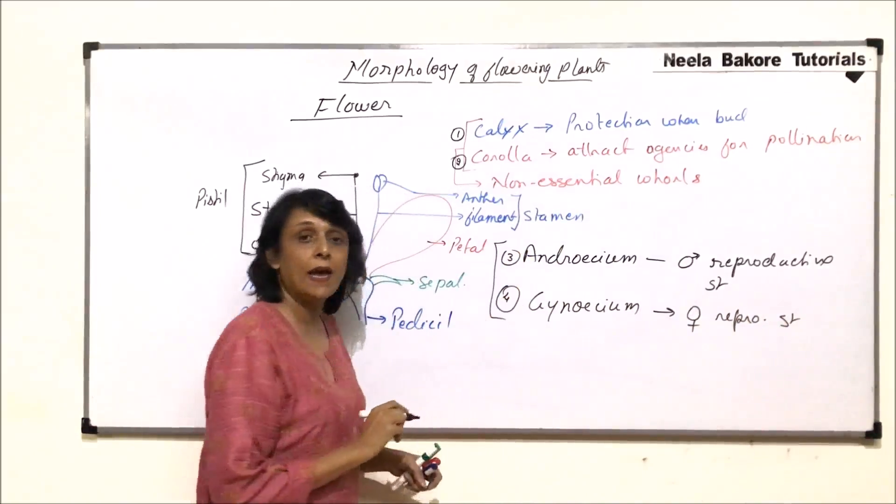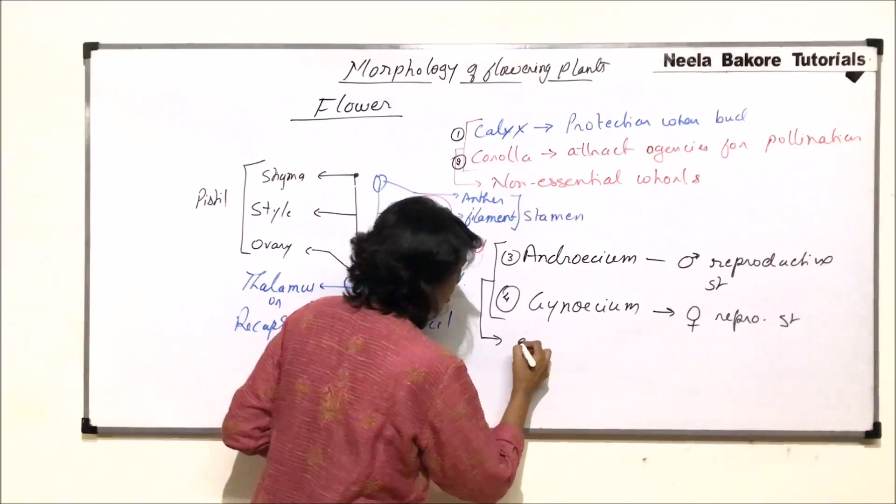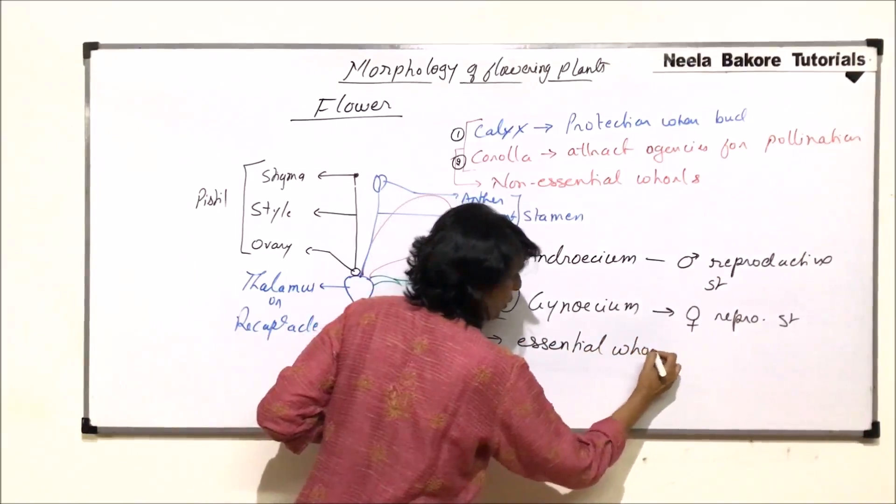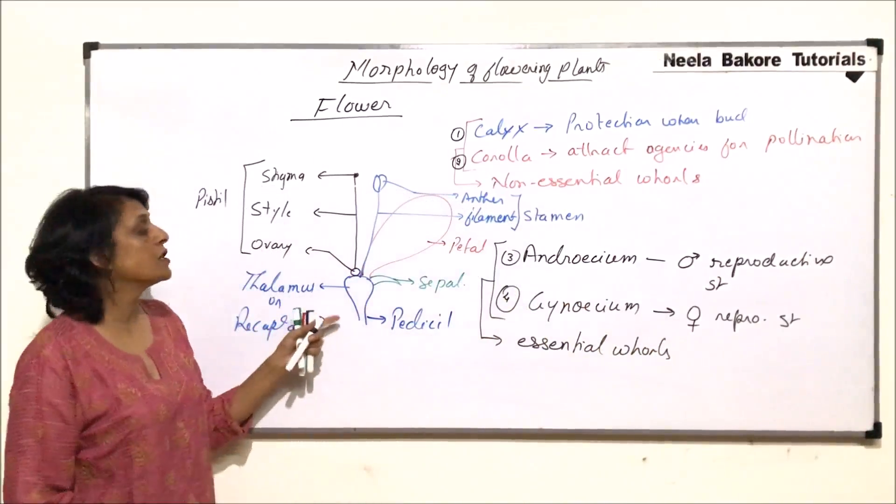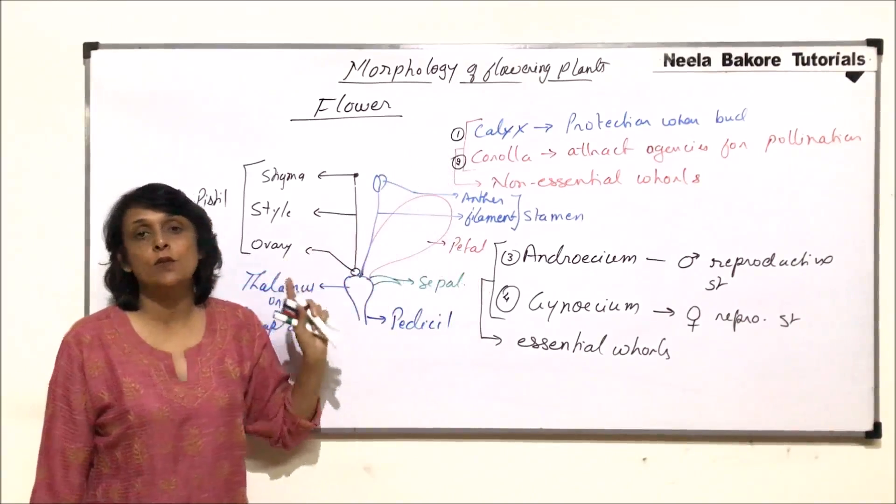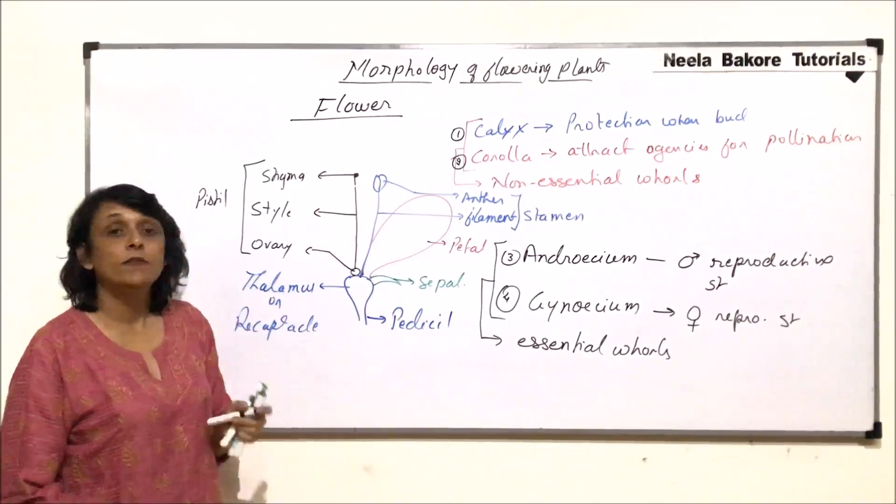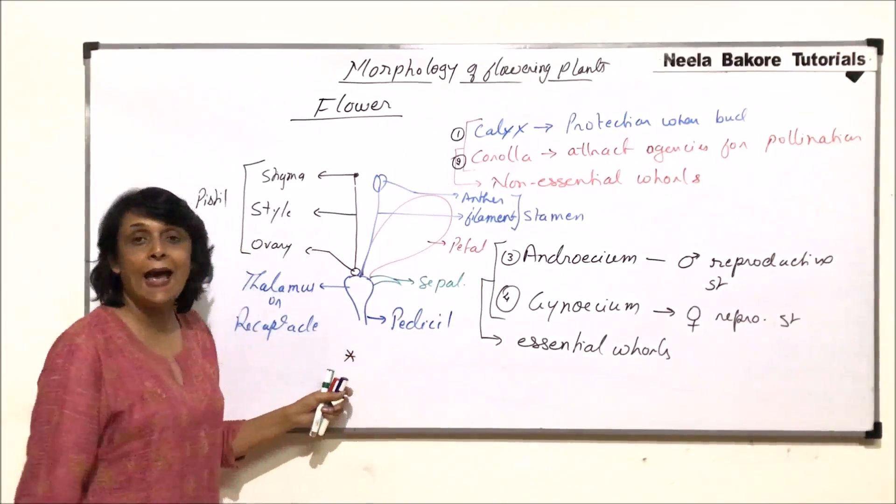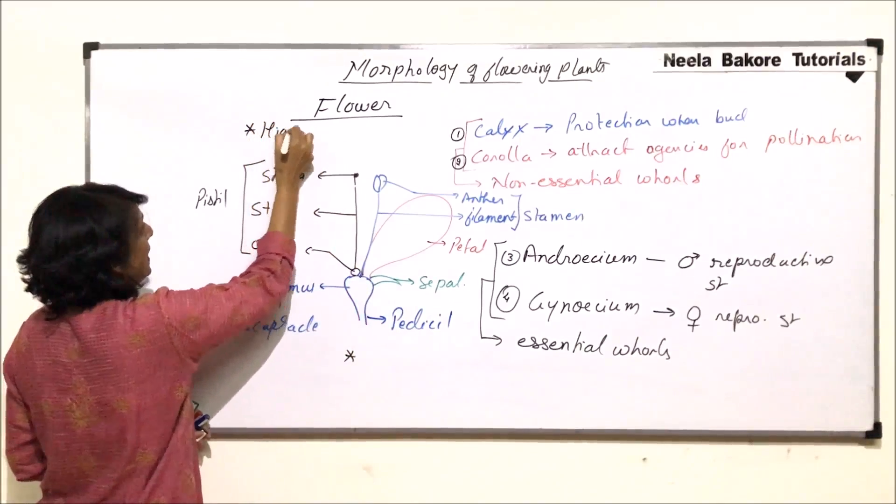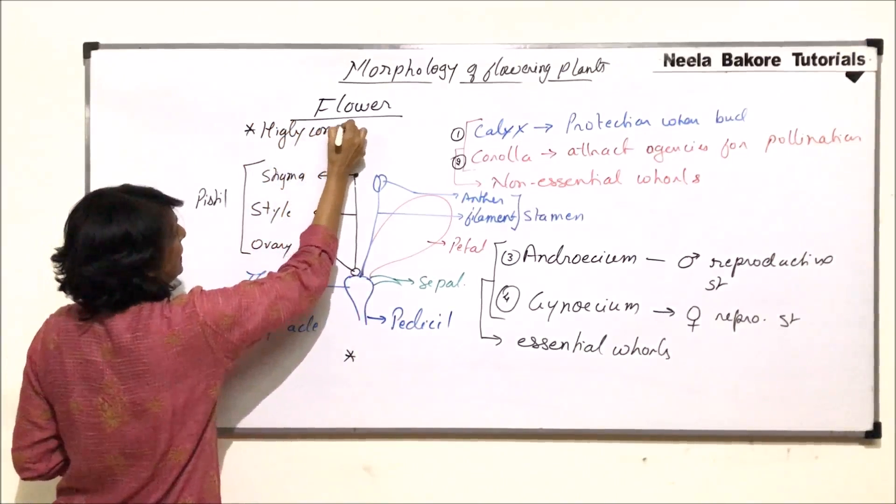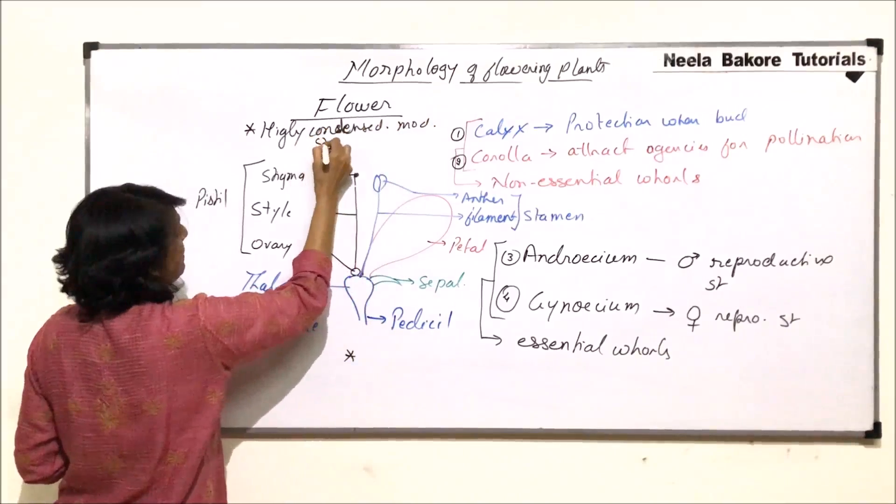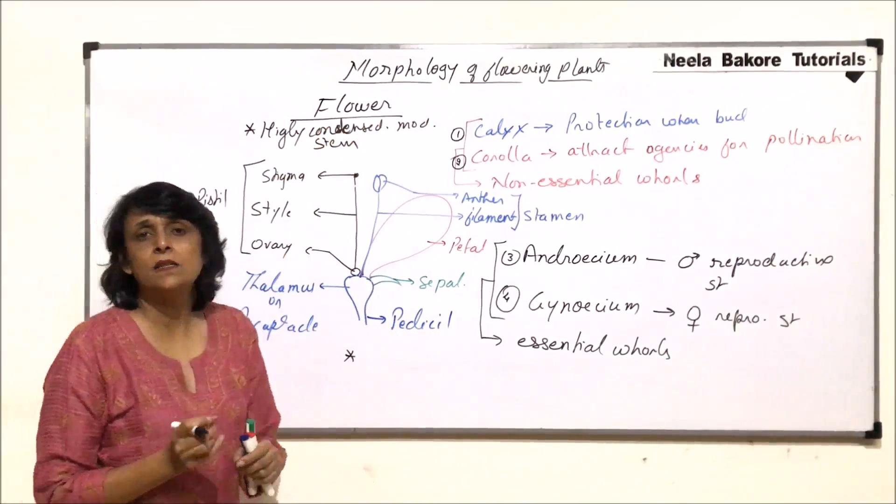These two together are known as the essential whorls. And this flower which is formed, it normally, a typical flower normally has all these four whorls. The flower is considered as a highly or let us write it here. A flower is a highly condensed modified stem or highly condensed stem.